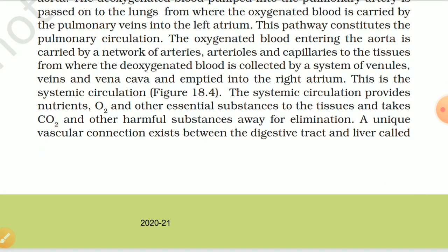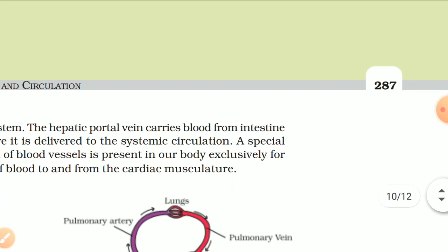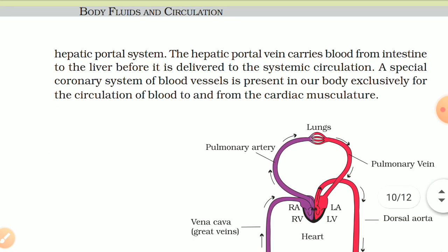The systemic circulation provides nutrients, O2 and other essential substances to the tissues and takes CO2 and other harmful substances away for elimination. A unique vascular connection exists between the digestive tract and liver called the hepatic portal system. The hepatic portal vein carries blood from the intestine to the liver before it is delivered to the systemic circulation. A special coronary system of blood vessels is present exclusively for the circulation of blood to and from the cardiac musculature.